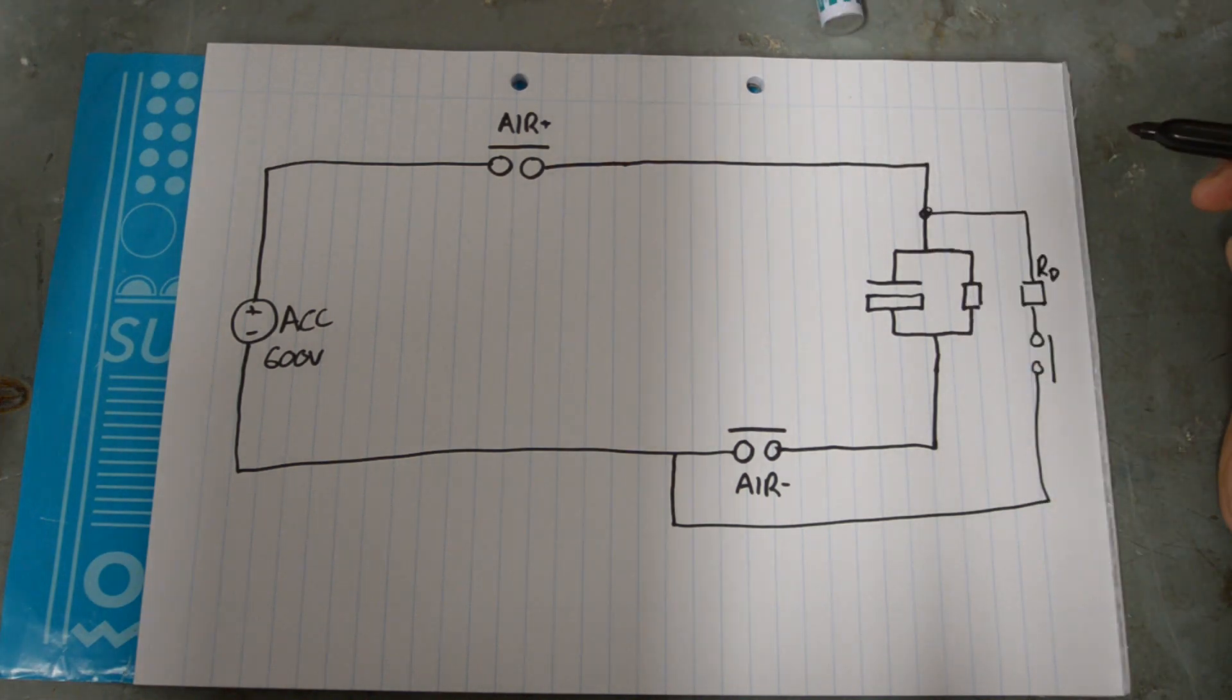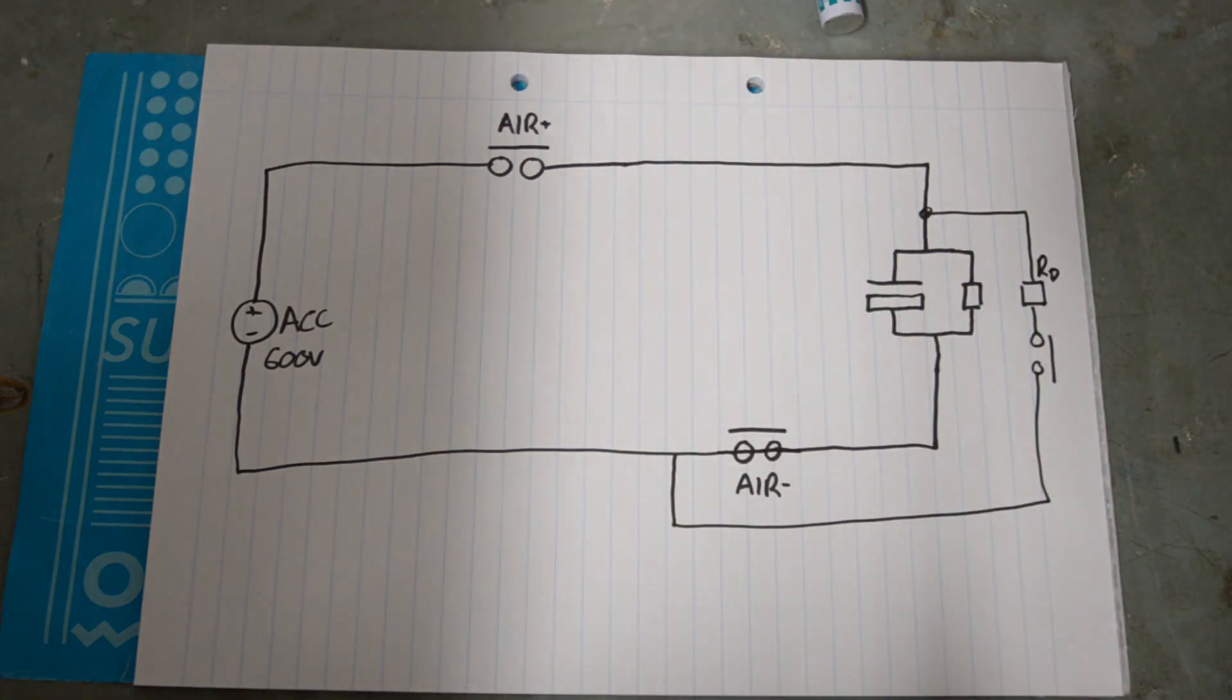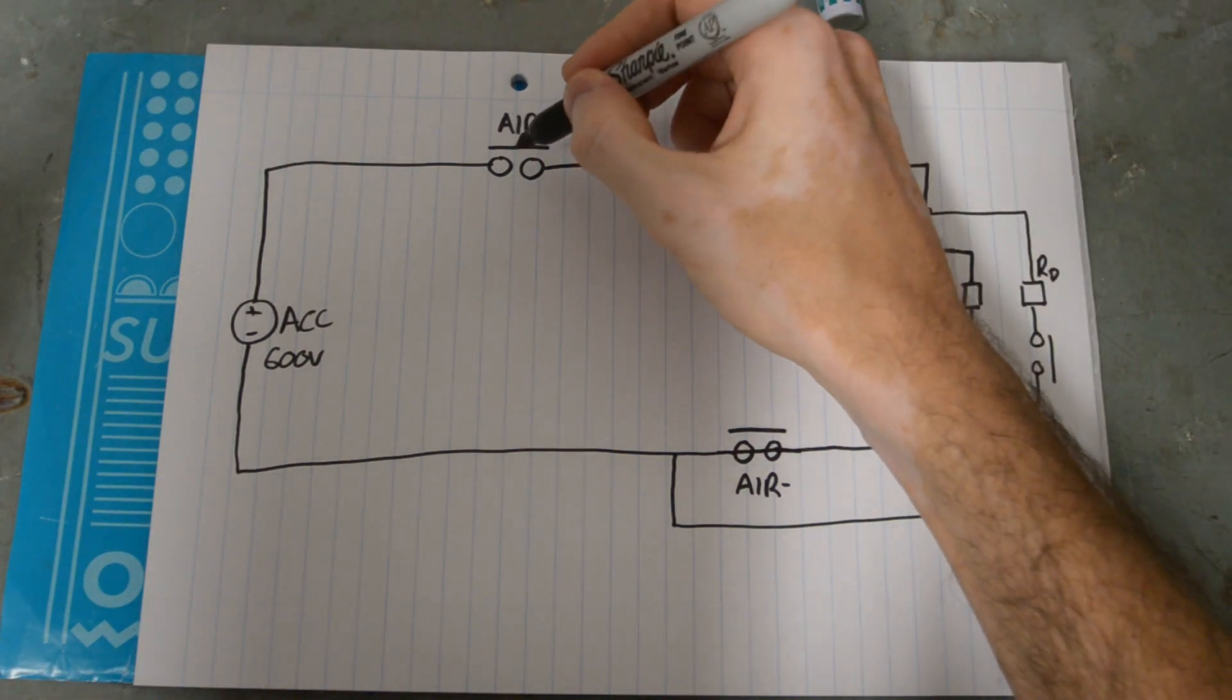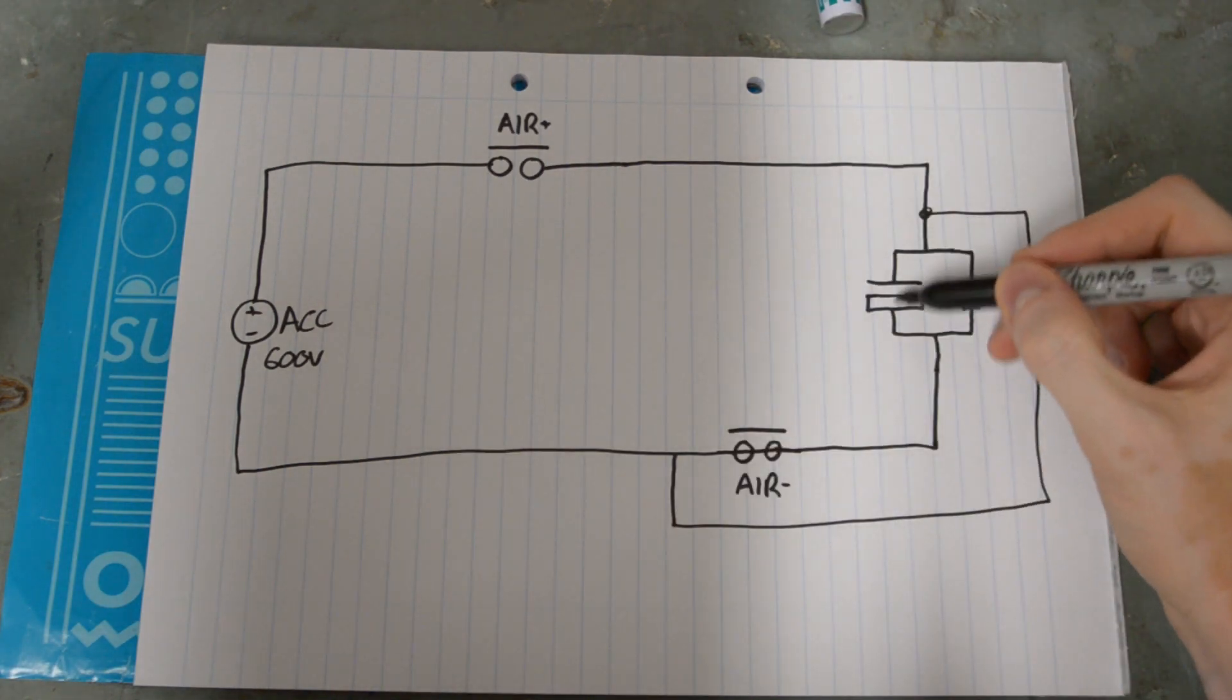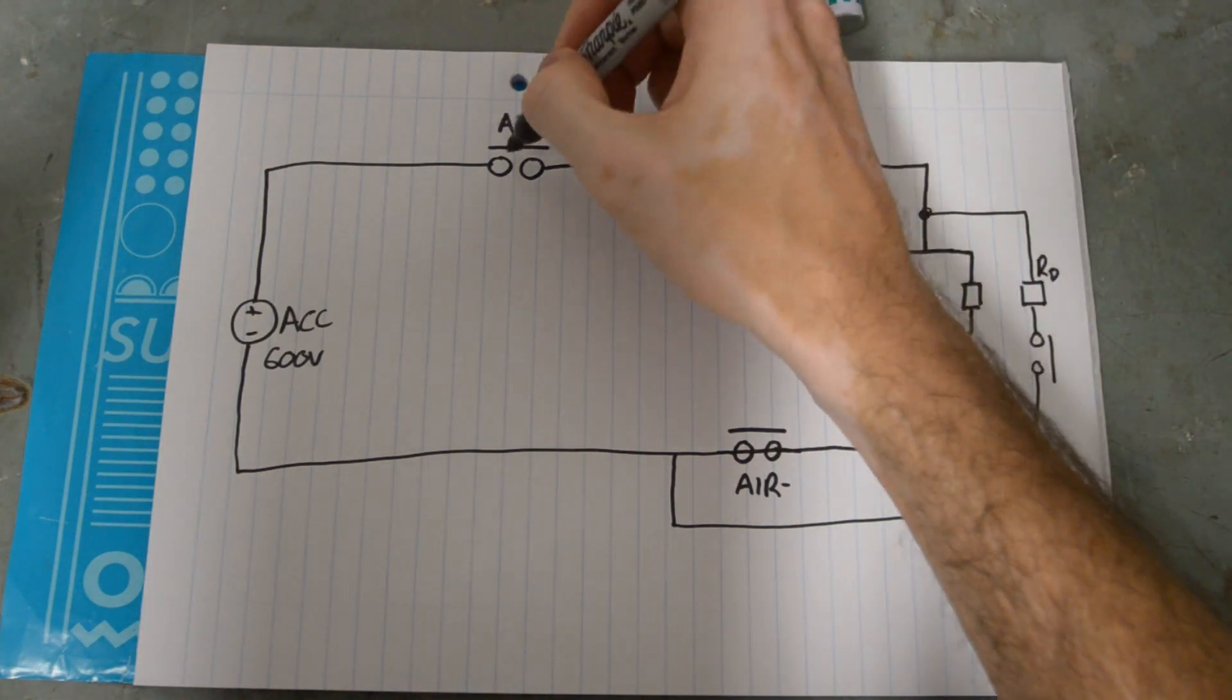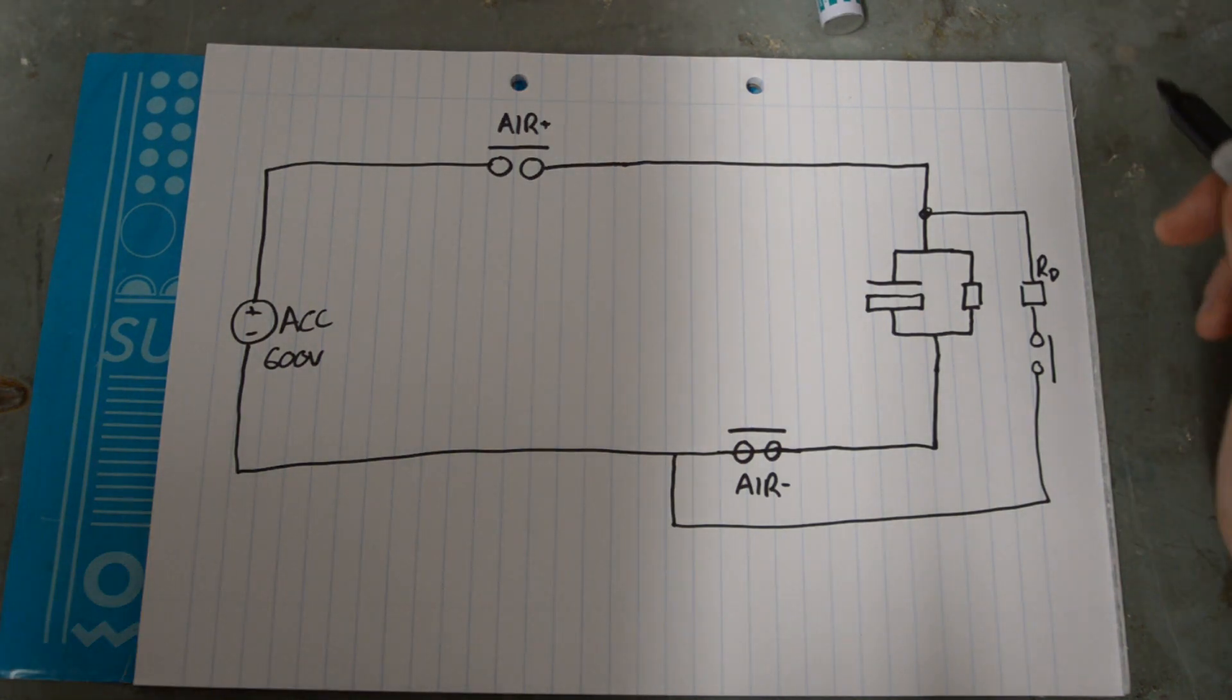But why do we need to pre-charge? Well, when we power up the electric vehicle, the negative air closes. I'll just make that a short because for us that's always going to be closed while we talk about this. This capacitor when it's empty looks like a short circuit. What that means is when this air closes you've got 600 volts going through what is essentially a short circuit. And that is an enormous current very briefly before that capacitor becomes charged and looks like an open circuit. So what's going to happen is that current is going to damage either the air or even the tractive system itself. These parts can only handle charging and discharging so fast. And that's why we need a pre-charge.